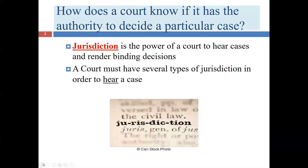What is jurisdiction? The definition from the textbook is: the power of a court to hear cases and to render binding decisions. If a court doesn't have jurisdiction over a particular party or type of claim, the judge is likely to not hear the case. And even if the court proceeds without proper jurisdiction, any decision it renders is not legally valid — a court lacking jurisdiction cannot render a decision that really matters.